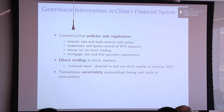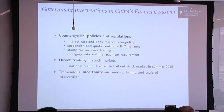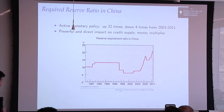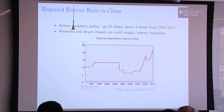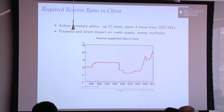Two years ago, we even saw direct trading by the so-called 'national team' with the objective of bailing out the stock market. Here are a few examples. This is the required reserve ratio for banks in China, one of the key policy tools used by the People's Bank of China — you can see a lot of changes up and down: 33 times up and 4 times down during a short period of 8 years.